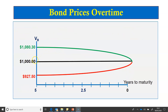Irrespective of whether a bond is issued at a premium or at a discount, as maturity approaches it will converge toward its par value, keeping other things constant. At maturity, the bond will always be trading at par value. In the next video tutorial, we will learn how to calculate the yield to maturity for a bond.